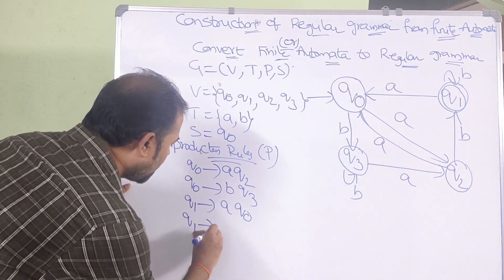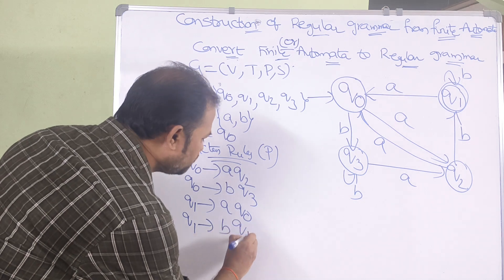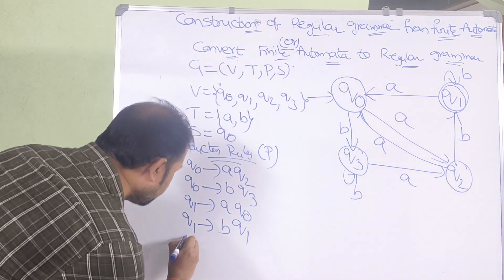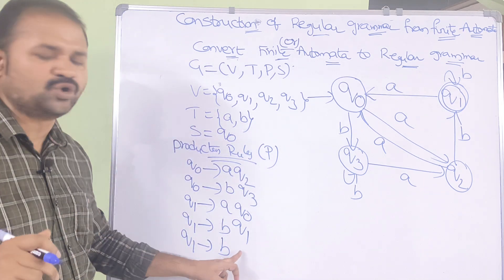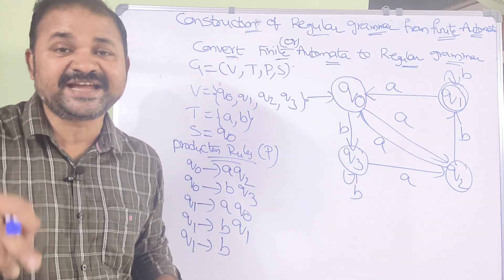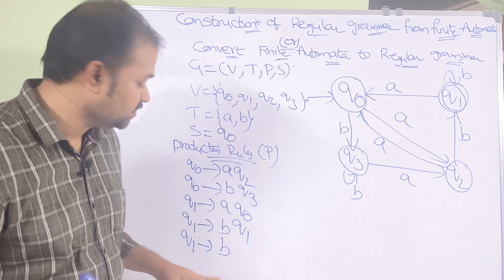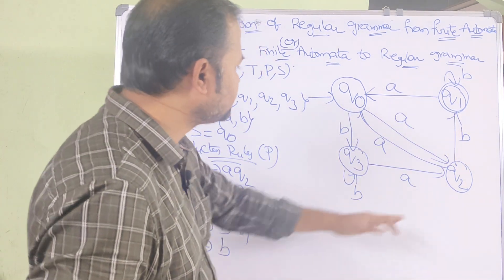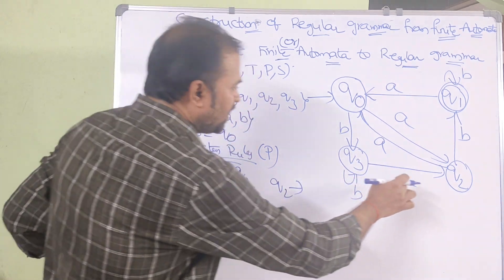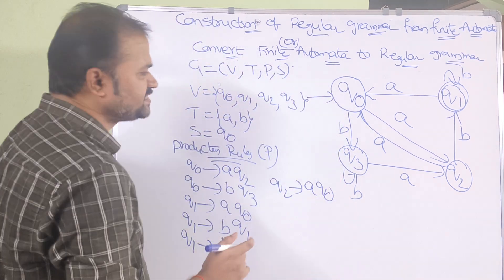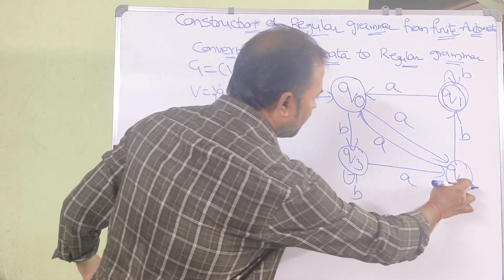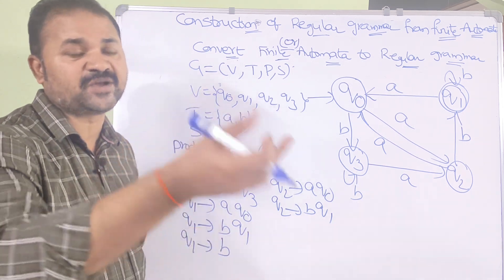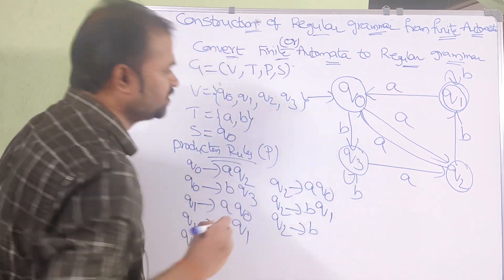q1 on applying b goes to q1, and q1 is the final state, so we introduce one more production: q1 → b q1 and q1 → b. For q2: q2 on applying a goes to q0 (not final state), so q2 → a q0. q2 on applying b goes to q1, which is the final state, so we get q2 → b q1 and q2 → b. For q3: q3 on applying a goes to q2 (not final), so q3 → a q2. q3 on applying b goes to q3 (not final), so q3 → b q3. In this way we can easily construct regular grammar from finite automata.